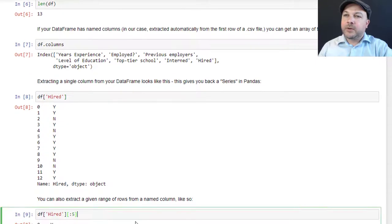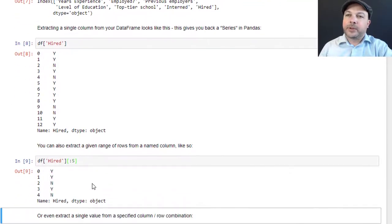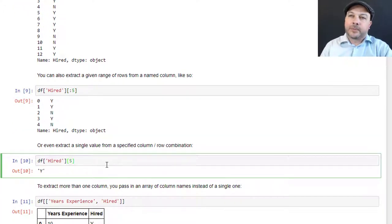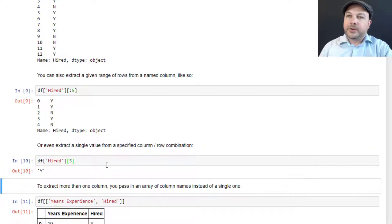You can also extract a given range of rows within a column like this. If I do df['hired'] and then an additional bracket with :5, that will extract the first five rows of the hired column. I get back a new data frame that looks like that, just five rows of the hired column and nothing else. You can see how pandas can be used to extract the data that you care about when you're preprocessing your data. You can also extract a single value. If I were to just say [5] at the end, that's explicitly plucking out the hired column on the fifth row, which happens to be the value Y.